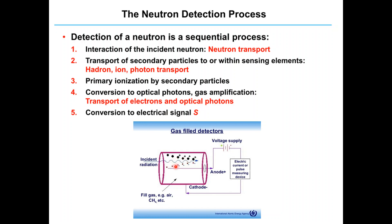Once the secondary particles interact with the gas particles inside the detector, or with semiconductor materials, the result is electron-ion pairs. These electron-ion pairs are then accelerated toward their respective electrodes — the anode and cathode — with the help of voltage supplied from an outside source, as seen in this gas-filled detector. The resulting signals are detected in the form of electrical signals, which serve as the neutron sensing output.